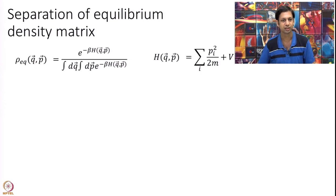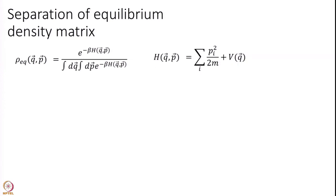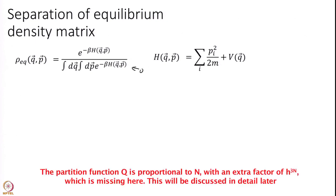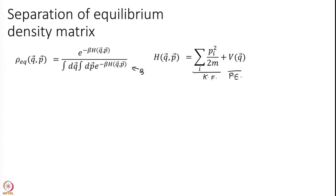Before moving forward, let us do one thing which is going to be useful. I have written down the definition of our rho equilibrium — which is what we derived in the last module — e to the power of minus beta H divided by Q. And I have written the Hamiltonian explicitly as kinetic energy plus potential energy. I want to substitute this H into rho equilibrium and see if we can simplify this equation a little bit.